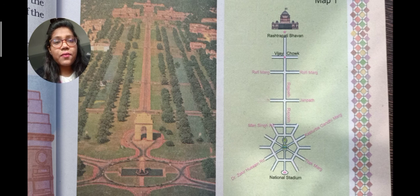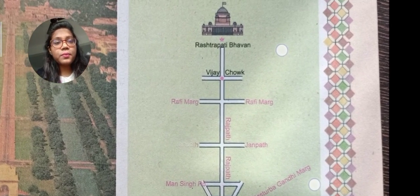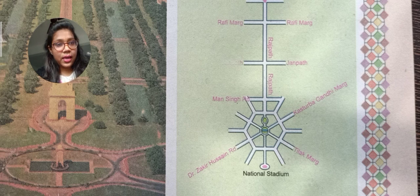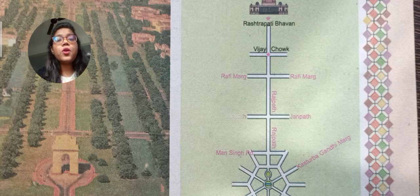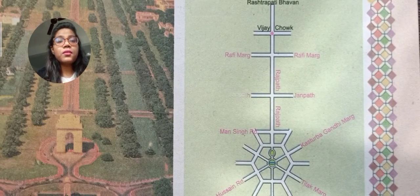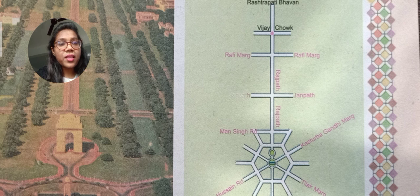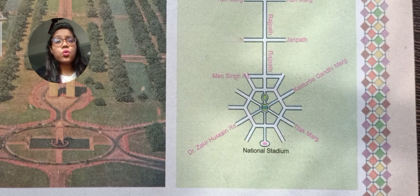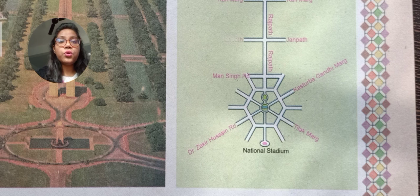Here the map of India Gate and Rashtrapati Bhavan is given. Rashtrapati Bhavan is on one side and India Gate is on exactly the opposite side. Between Rashtrapati Bhavan and India Gate, the roads are: Rafi Marg, Vijay Chowk, Rajpath Marg, Janpath, Manasi Road, and Kasturba Gandhi Marg. These are the roads you will cross on your way from Rashtrapati Bhavan to India Gate.